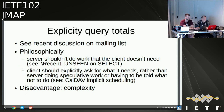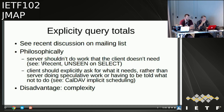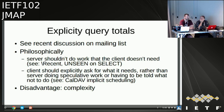Next: explicit query totals. The basic philosophical argument is that the server shouldn't do work the client doesn't need. The 'recent' flag and 'unseen' count on SELECT in IMAP are examples of things the server is required to compute even though the client might not care, requiring additional code complexity. The proposal is that the client should explicitly ask for the things it needs rather than having the server do speculative work by default.